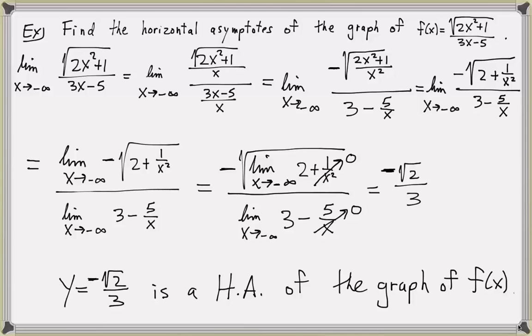So we see that to the right, the limit as x approaches infinity is square root of 2 over 3, and as x approaches negative infinity, the limit is negative square root of 2 over 3.